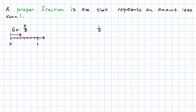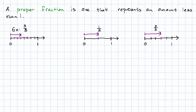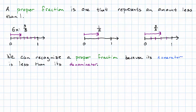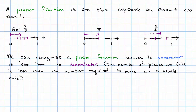Another example might be 1 half — again, if we draw that as a length, that's shorter than 1 whole unit. One more example: 3 fifths — once again, that's shorter than 1 whole unit. Those are all proper fractions. How can we recognize these? We can recognize a proper fraction because its numerator is less than its denominator. To represent less than 1 whole unit, less than 1 whole thing, simply means the number of pieces I'm taking is less than the number of pieces required to make up a whole unit.